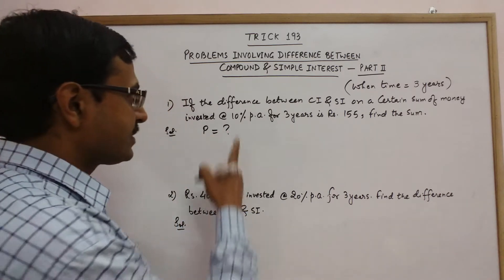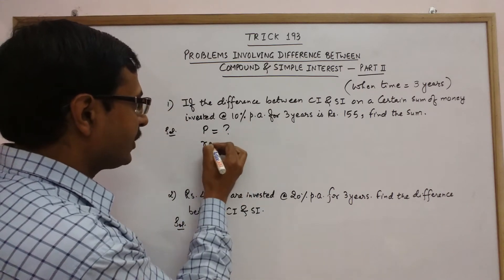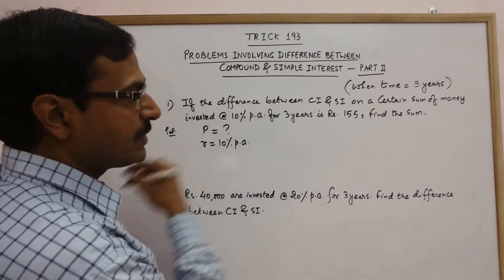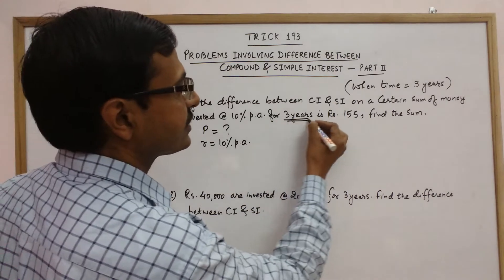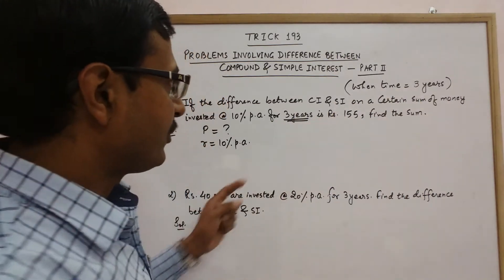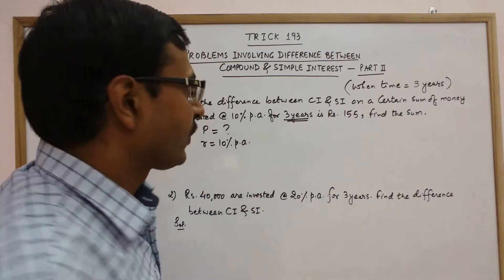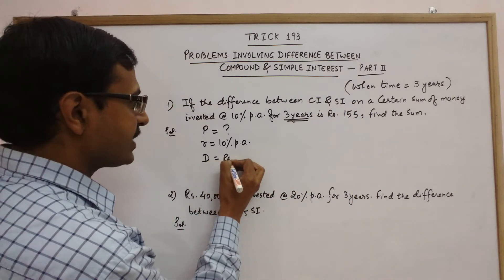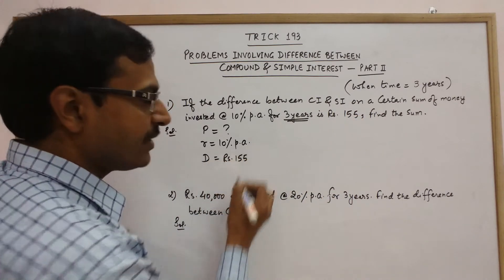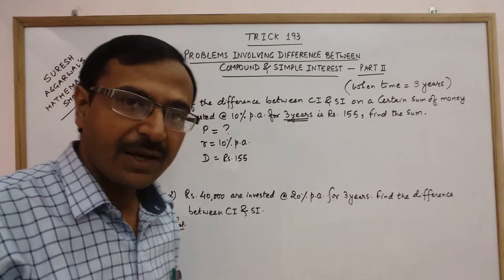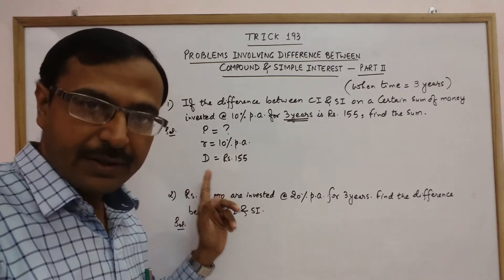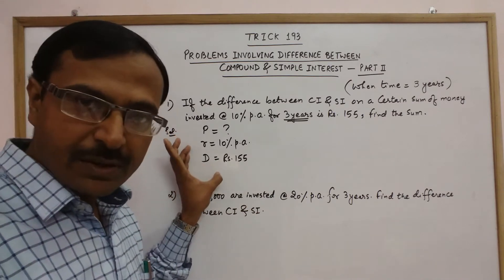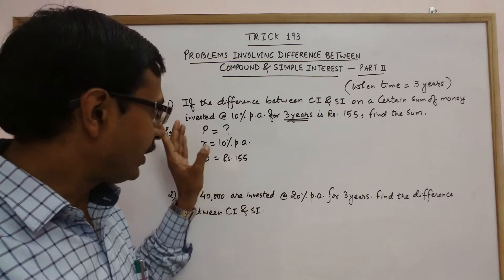What we are given is 10% per annum, this is the rate of interest. And obviously the time is 3 years. The problem which we are doing is for 3 years only. And this is the difference between CI and SI. So I am representing this difference between CI and SI as capital D. So we have two variables which are already given and we need to find P.